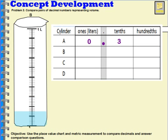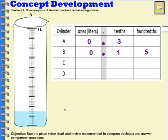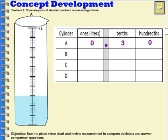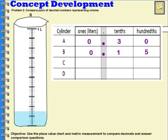Let's take a look at cylinder B. I'm going to start by putting in my zero ones, because I do not have one whole liter. But I do have one-tenth of a liter. I've got to put in my decimal, then my one-tenth. From the bottom to this part is one-tenth. Then I count how many hundredths more: one, two, three, four, five — five-hundredths more. This is thirty-hundredths for A and fifteen-hundredths for B, so A is more than B.